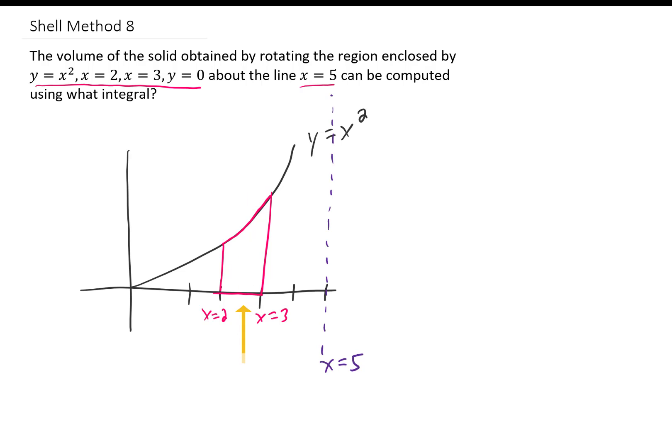With the shell method, if we're rotating around the line x equals five, we need to split up our region vertically. Each one of these shells is then going to have a width of dx, and we're going to rotate each one of those shells around that line like that. We can then add up all of the volumes of these thin shells between x equals two and x equals three to find our volume.